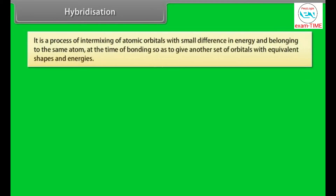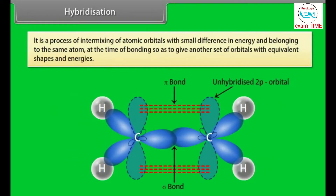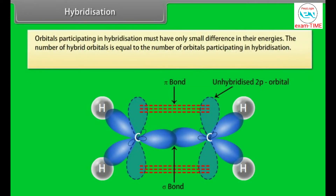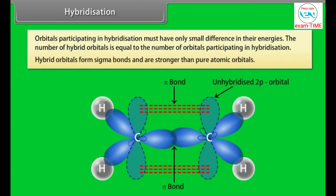Hybridization is a process of intermixing of atomic orbitals with small difference in energy and belonging to the same atom at the time of bonding, so as to give another set of orbitals with equivalent shapes and energies. Orbitals participating in hybridization must have only a small difference in their energies. The number of hybrid orbitals is equal to the number of orbitals participating in hybridization. Hybrid orbitals form sigma bonds and are stronger than pure atomic orbitals.